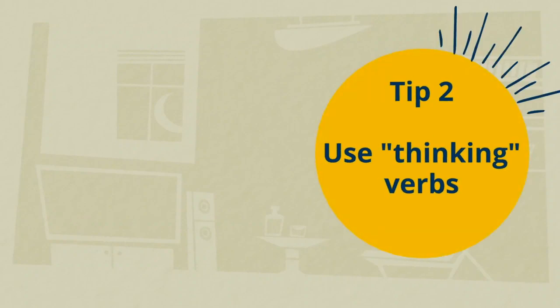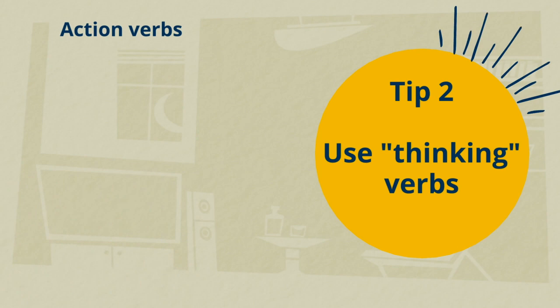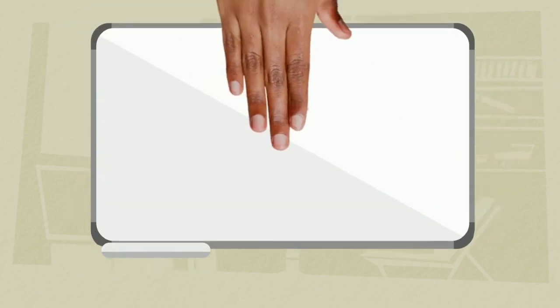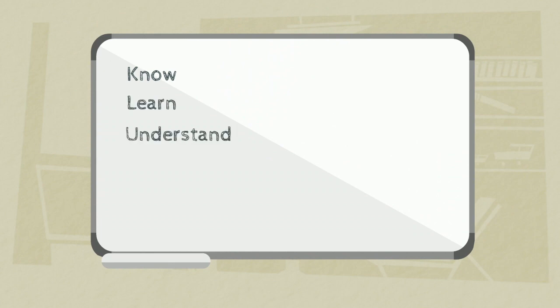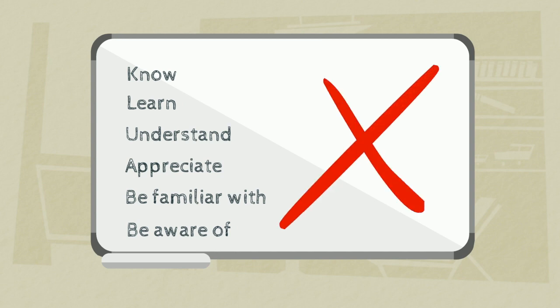Tip number two: use thinking verbs. Figure out what kind of thinking you want the students to do for each topic. Be specific and use action verbs. For example, students will explain, hypothesize, describe, compare, or predict. Never use words like know, learn, or understand, because your students could interpret them to mean anything from memorizing vocabulary to defending an argument.